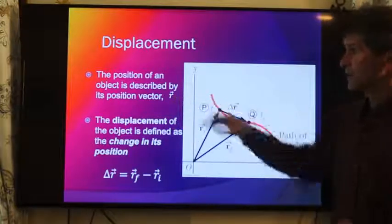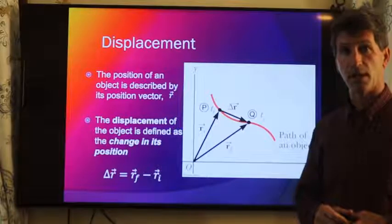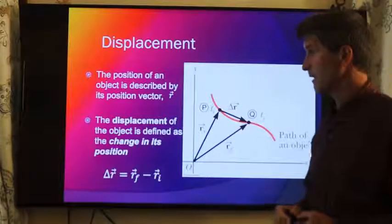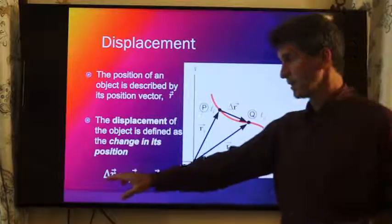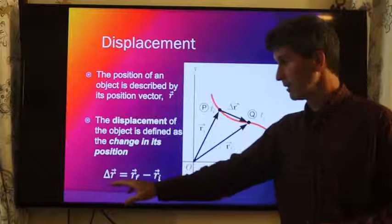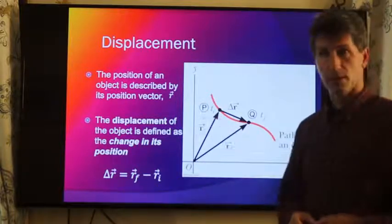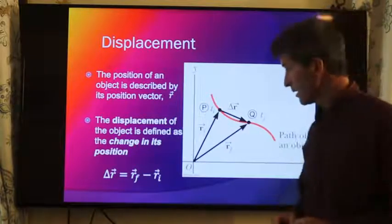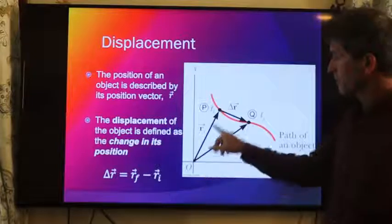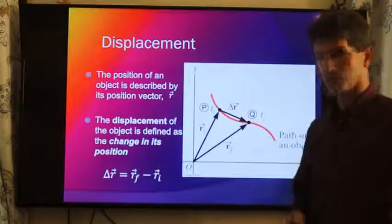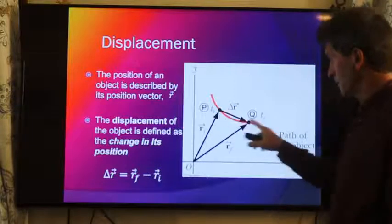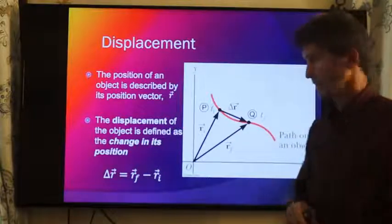Our displacement is now represented by the vector r. And I should say the displacement is represented by delta r, where r is actually the position vector. So our initial position points from the origin to our initial starting point. Maybe we're following this orange line right here.